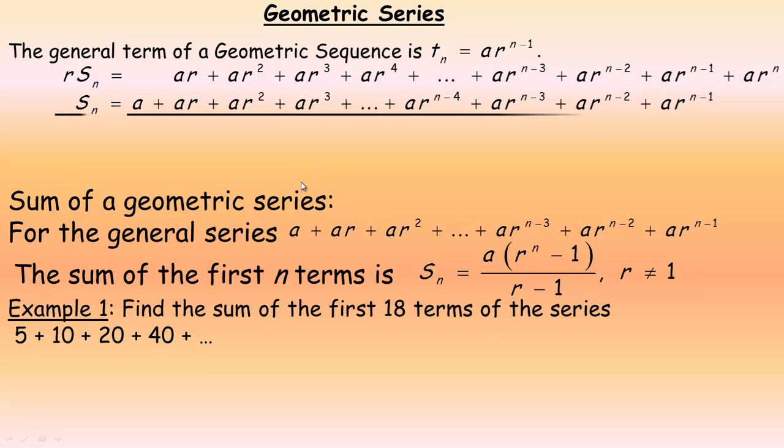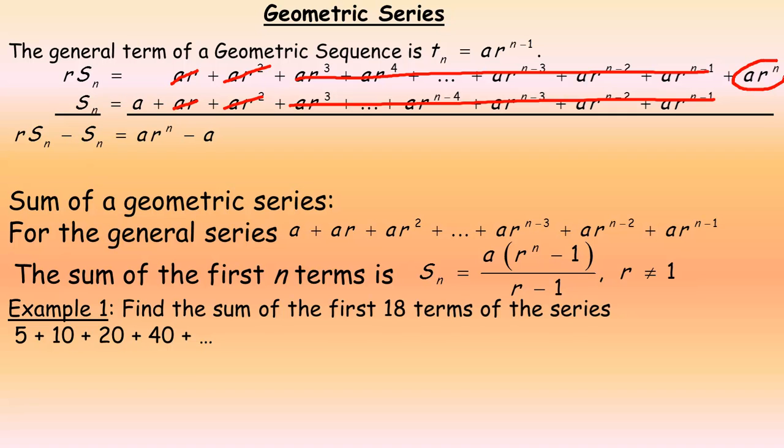Now what we're going to do is we're going to subtract. We're going to take the top and subtract the top row minus the bottom of the second row. So it would be r s sub n minus the s sub n. Now notice what happens when you subtract here. This a r minus a r, they subtract to 0. And same with the a r squared and the a r squared next. In fact, all of this and all of this are the same. So that all subtracts to 0. So basically we're really just left with this term minus this term. So that's why it's a r to the n, the 1 at the very end there, minus the a.